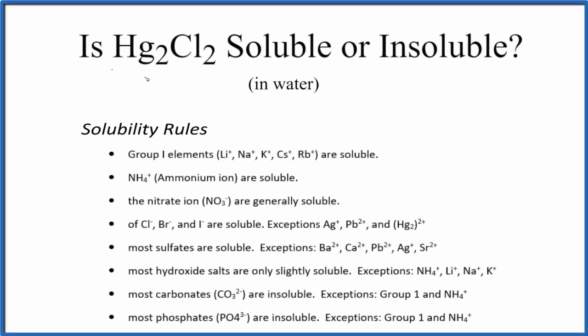Let's take a look at whether Hg2Cl2 is soluble or insoluble, and we're talking about in water. So Hg2Cl2 is called mercury 1 chloride, and it's kind of a strange compound.